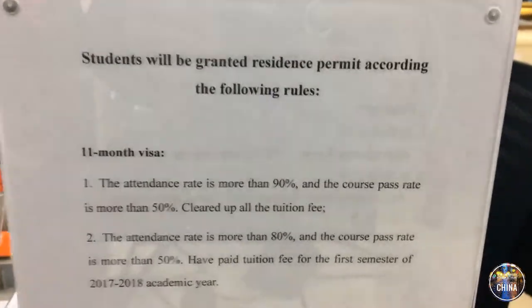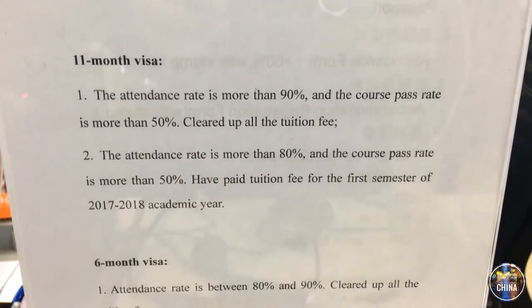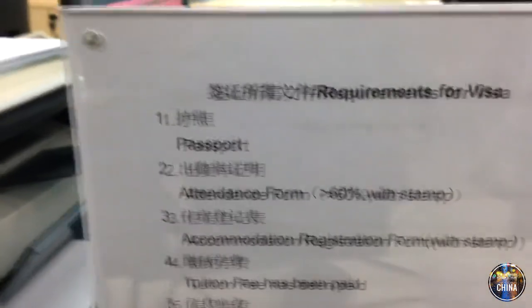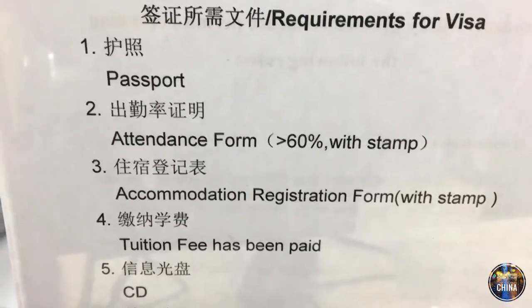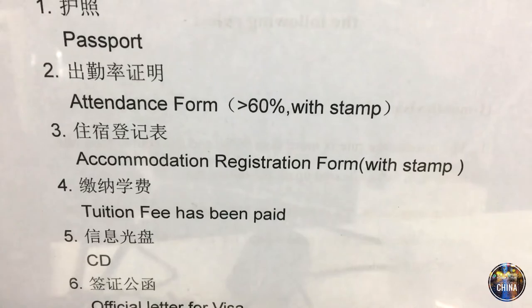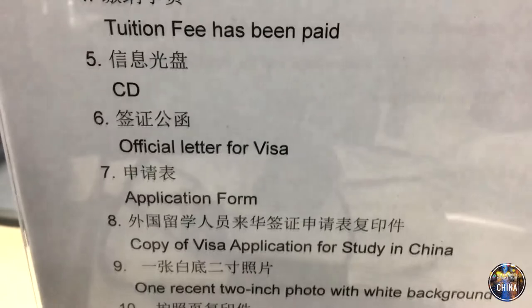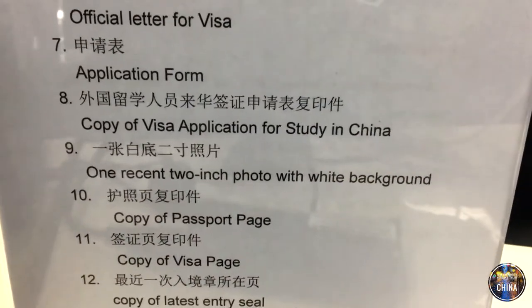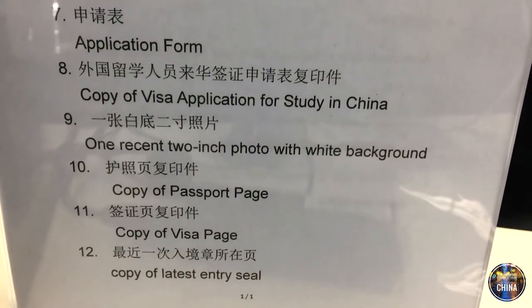This is our office. After asking permission and consent from the office staff, I was allowed to record inside. Here is some information on visa requirements. There are eleven-month and six-month visa options. Compulsory requirements for everyone include: passport, attendance rate above 60% along with office stamp, a commerce registration form, proof that the solution fee has been paid, an 80 official letter, visa application form, copy of visa, first entry record in China, and one recent photo with a white background.